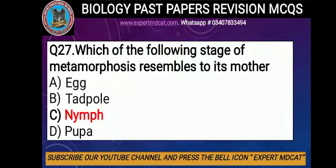Question number 27: Which one of the following stages of metamorphosis resembles its mother? Metamorphosis is a characteristic of arthropods. There are two types: complete metamorphosis and incomplete metamorphosis. Meta means change and morphosis means shape and form. In incomplete metamorphosis: egg → nymph → adult. In complete metamorphosis: egg → larva → pupa → adult.